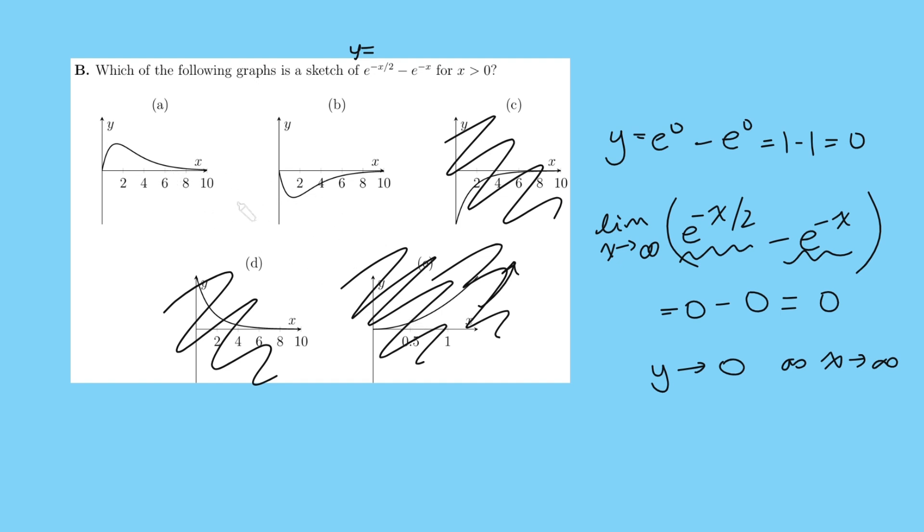And now in order to distinguish between the two, we can just think about whether the y values are positive or whether they're negative. I think I might just plug in an x value here. So if I plug in x equals 2 into this, when x is 2, y is equal to e to the negative 1 minus e to the negative 2. And that's the same as 1 over e minus 1 over e squared. And obviously, since e is bigger than 1, e squared is going to be bigger than e. And so if I do 1 over e squared, that's going to be smaller than 1 over e. So this is indeed positive. So it's not b. And the answer is therefore a.